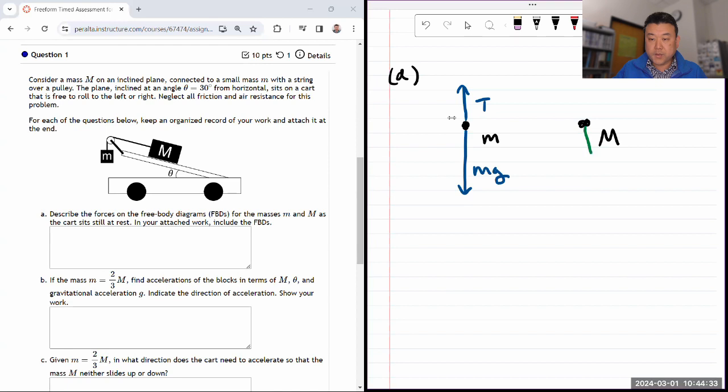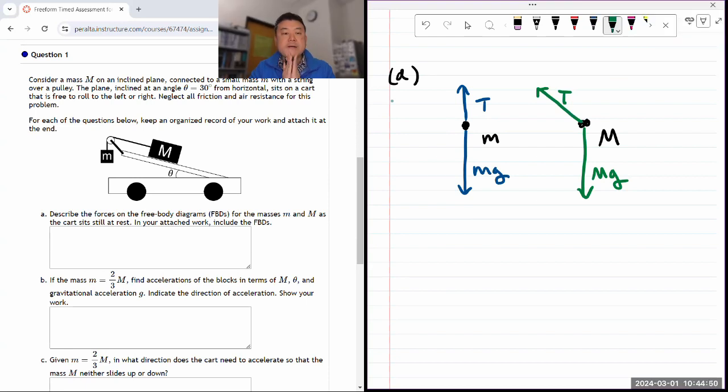Big mass M, there's again, always going to be gravity. And then I think through, there's a string touching it also. So there's probably tension force pulling it that way. The directions that that big mass M might accelerate is either up the slope or down the slope.